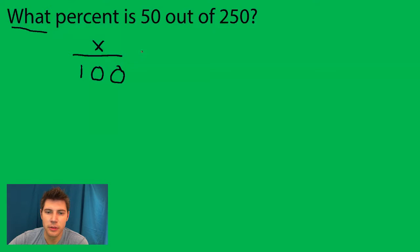And then 'is' is always an equal sign. And then 50 out of 250 is written as 50 over 250. So now we just need to solve for this. We can cross multiply.